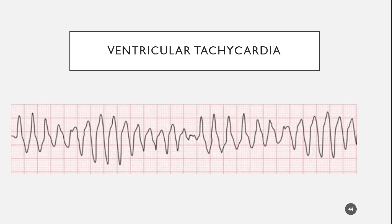What you see here is V-tac that begins with really large amplitude, then it begins to get smaller in amplitude, then gets larger and smaller — that pattern is repeated. This type of V-tac is called polymorphic, meaning multiple shapes.